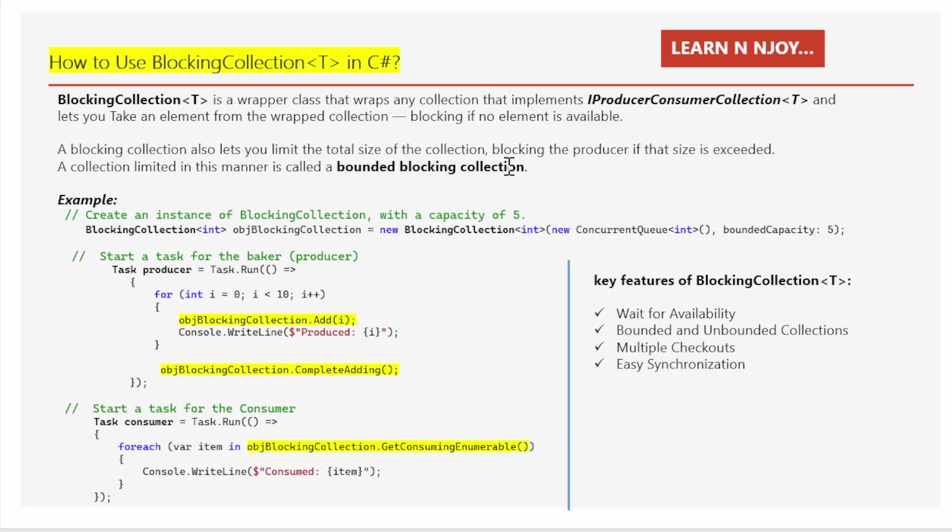Now consider the blocking collection queue. Imagine a checkout line where you are guaranteed that someone will help you, but you might have to wait. This is where BlockingCollection<T> comes in. If you are at the front of the line but there is no cashier available, you just wait until someone is ready. You won't be sent away empty-handed.